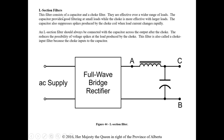The L-section filter consists of both a capacitor and a choke filter. The capacitor provides good filtering at small loads, while the choke is more effective with larger loads. The capacitor also suppresses voltage spikes produced by the choke when load current changes rapidly. The L-section filter should always be connected with the capacitor across the output after the choke, reducing the possibility of voltage spikes reaching the load. This filter is also called a choke input filter because the choke feeds into the capacitor.